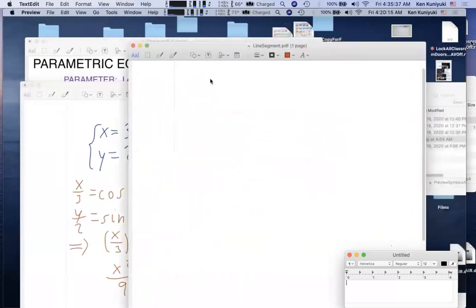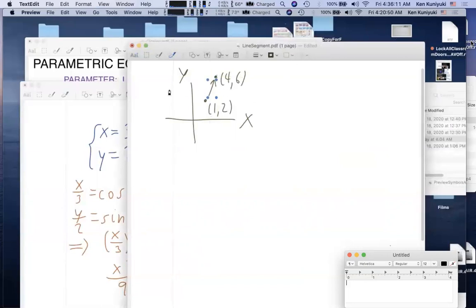Now, what about something more basic? How about a line segment? For example, how do we parametrize a line segment that goes from 1, 2 up to, let's say, 4, 6? Here's the initial point. Here's the terminal point. Consider this directed line segment. Looks like a vector. In fact, we can think of this as a representation of the vector. 4 minus 1 is 3. 6 minus 2 is 4. This is a representation of the vector 3 comma 4.